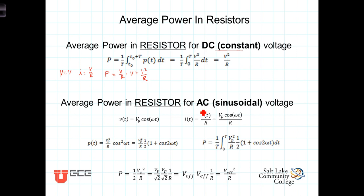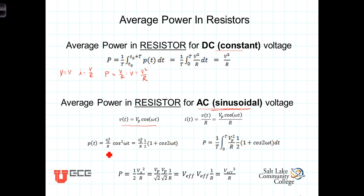When we have an AC or sinusoidally varying voltage, instead of a constant voltage, our voltage will be sinusoidal. The current associated with that voltage across the resistor will be just the voltage divided by the resistance, which is Vp cosine(ωt) divided by R. The instantaneous power V(t) times I(t) will be Vp squared times cosine squared of ωt over R. That's the instantaneous power.